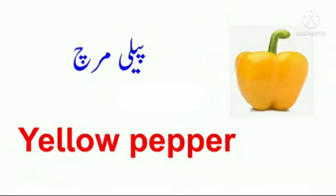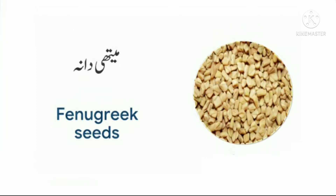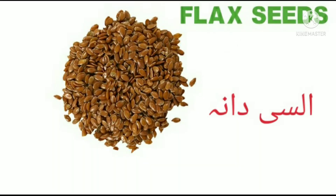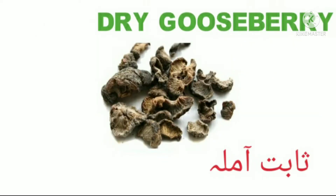Number twelve: dry fenugreek leaves, kasuri methi. Number thirteen: fenugreek seeds, methi dana. Number fourteen: carom seed, ajwain. Number fifteen: flax seeds, alsi dana. Number sixteen: mango powder, amchur. Number seventeen: dry gooseberry, sabat amla.